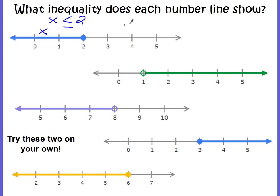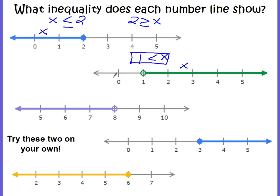You could also switch this around and write the 2 first: 2 is greater than or equal to x — make sure the alligator is eating the 2. In our second example, we have 1 and our x goes to the right, so x is going to be larger. The alligator is going to eat the larger number. Our circle is empty, so it is not equal to. So we could say that 1 is less than x. You could flip it around and write x first — the alligator is going to eat the x because it's larger than the 1.